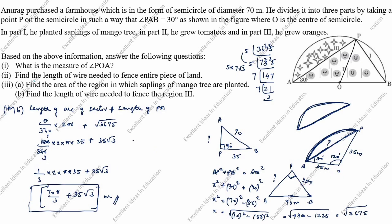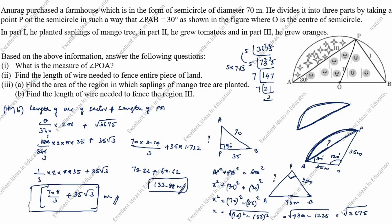Simplifying: 70 × 3.14 divided by 3 plus 35 × 1.732 equals 73.26 plus 60.62 equals approximately 133.88 meters. This is the final answer. Thanks for watching this video.